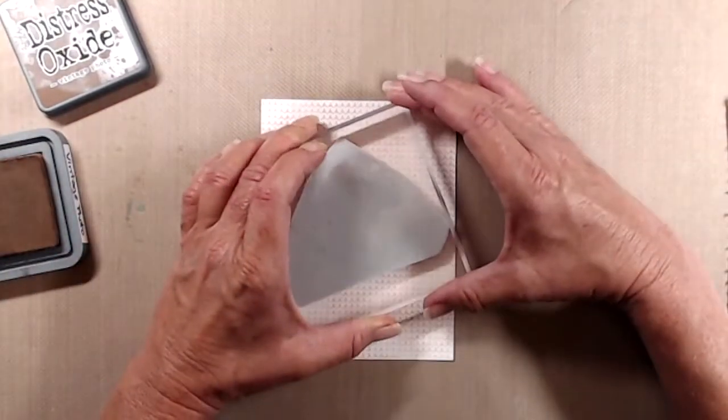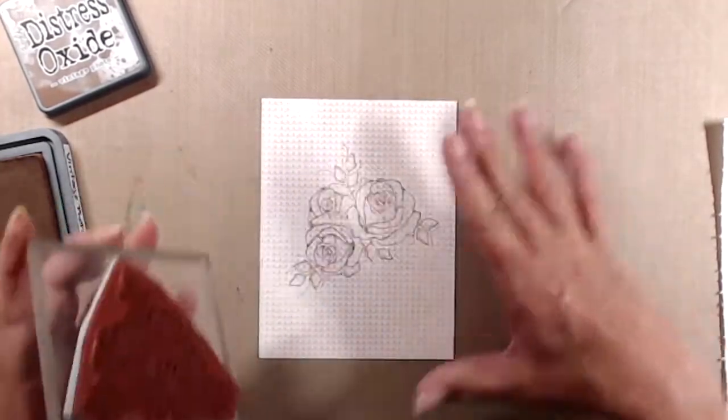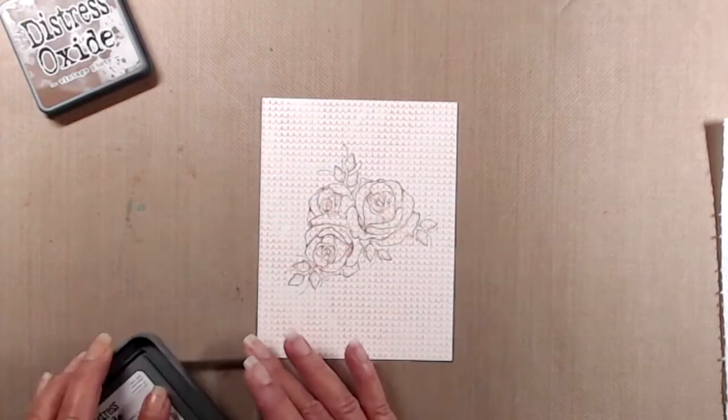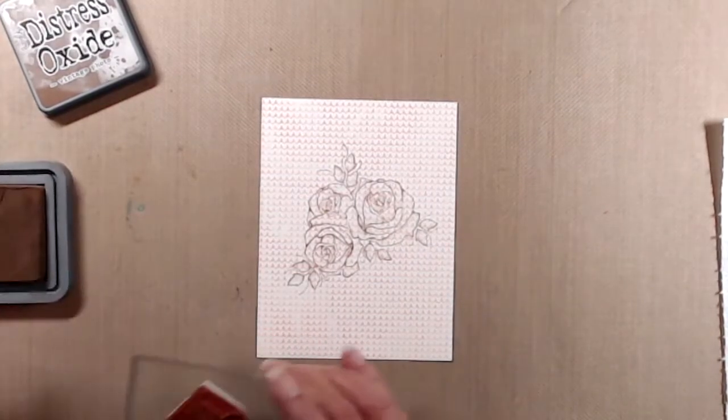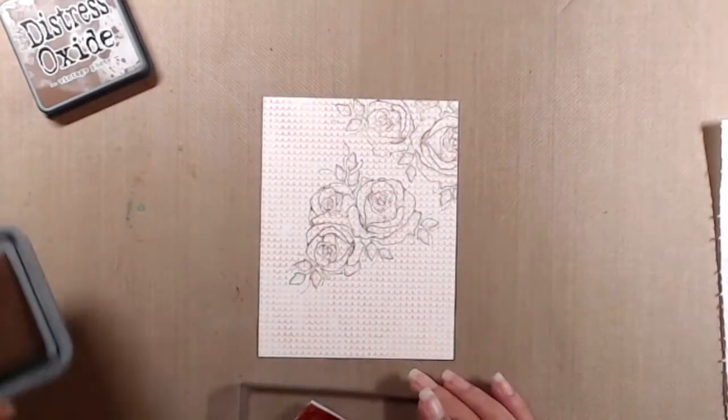After I stamped the big background stamp, I grabbed the cluster of roses from the winter roses background and I stamped directly on top of the cross stitch hearts using vintage photo distress oxide ink.